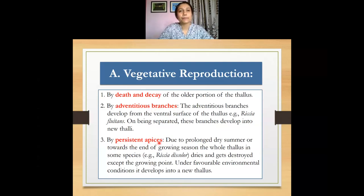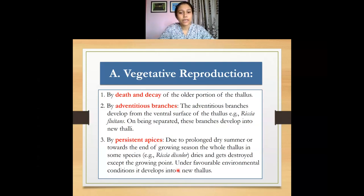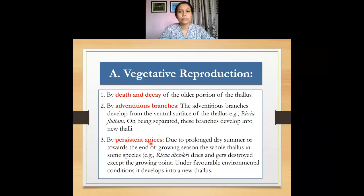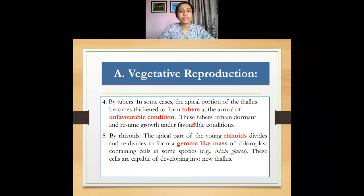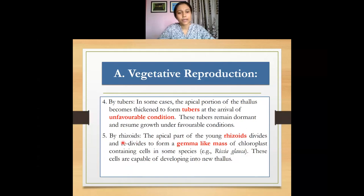Another vegetative method is by persistent apices. When environmental conditions are very unfavorable, the whole plant body may dry up, but only the apex or tip survives. When conditions become favorable again, the persistent apex can regenerate and develop into a new thallus. Also, by formation of tubers — at the apical portion of the thallus, tuber-like structures are produced under unfavorable conditions. These tubers can withstand prolonged unfavorable conditions, and when conditions become favorable they germinate to give rise to a new thallus.